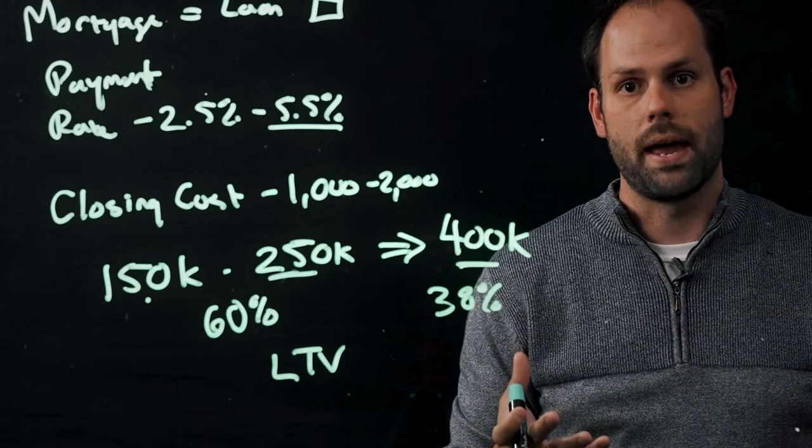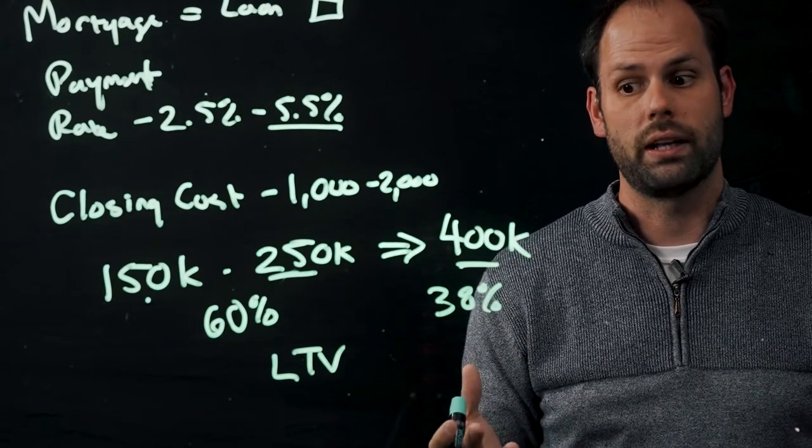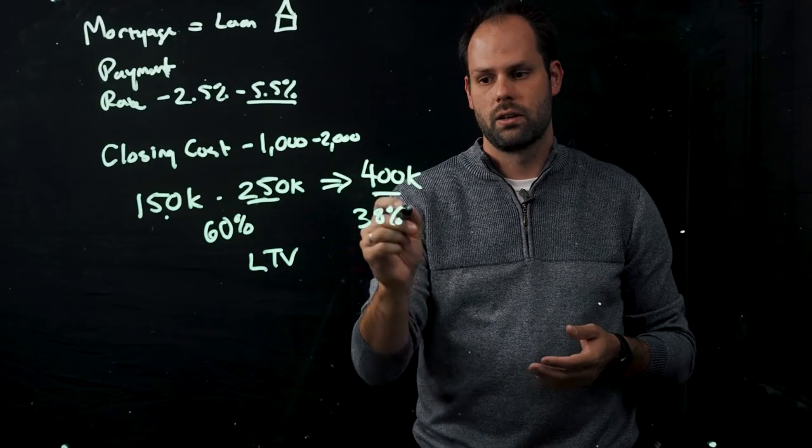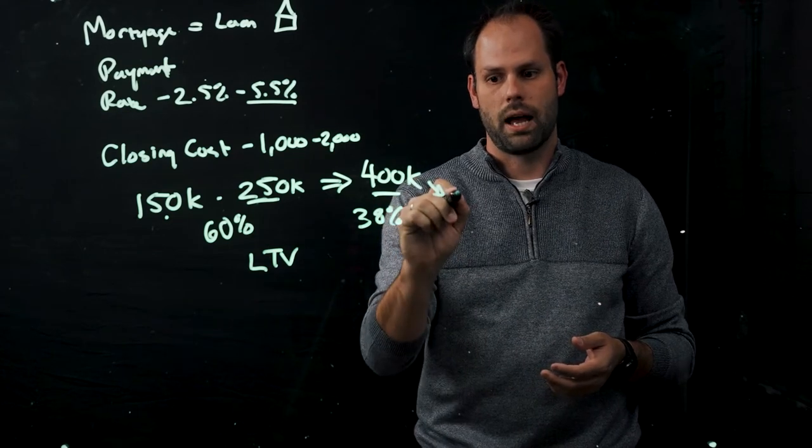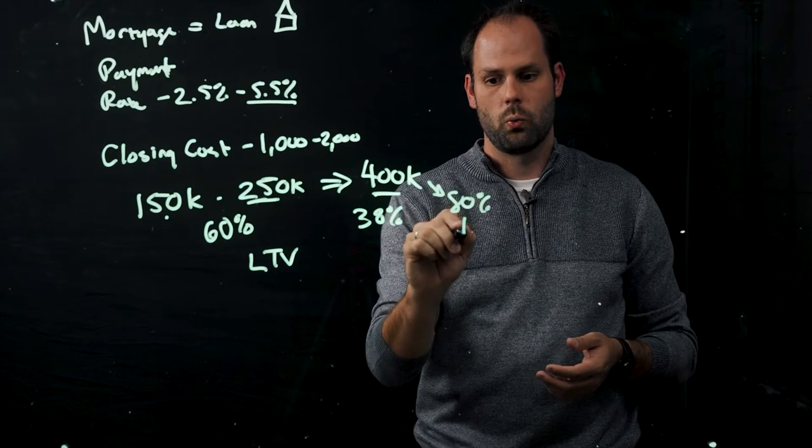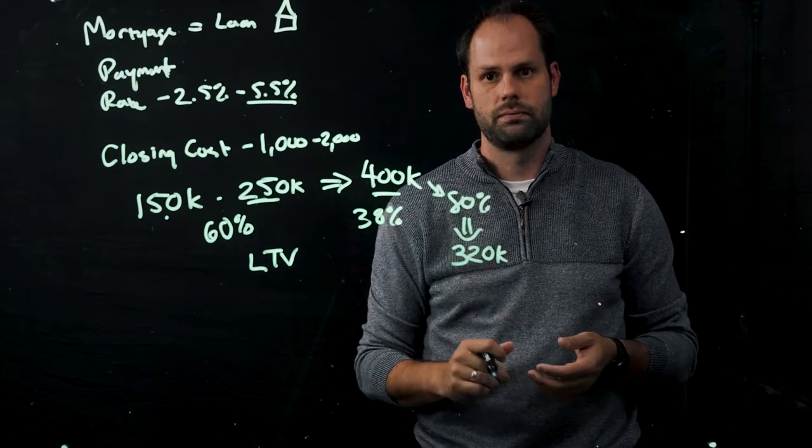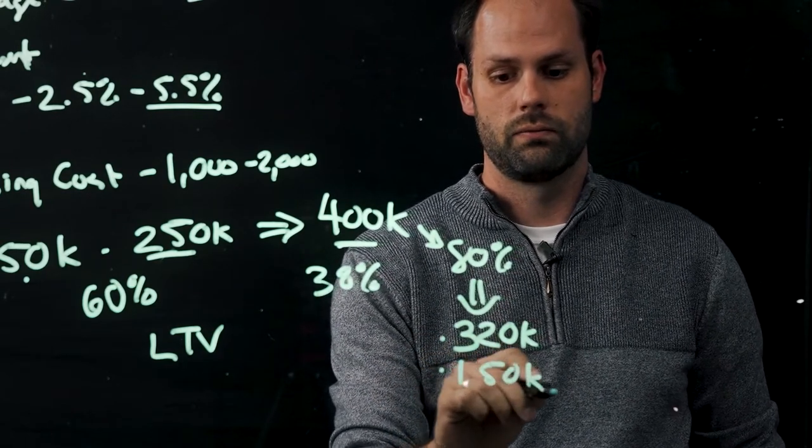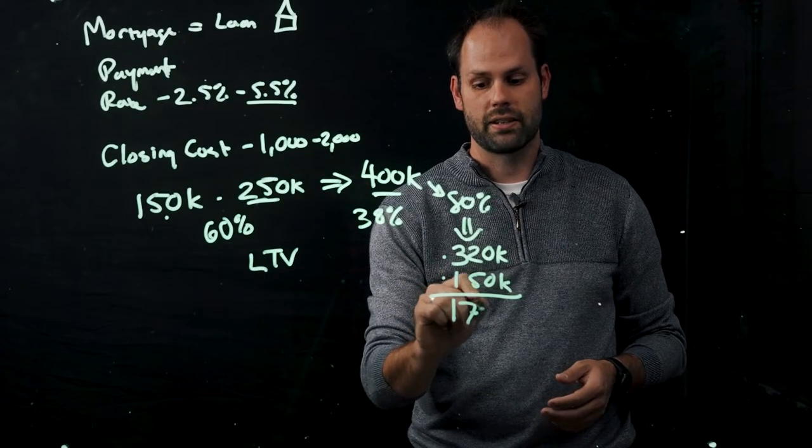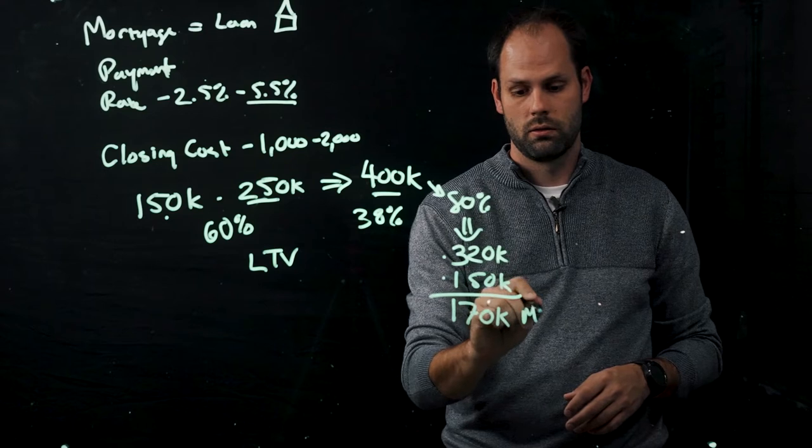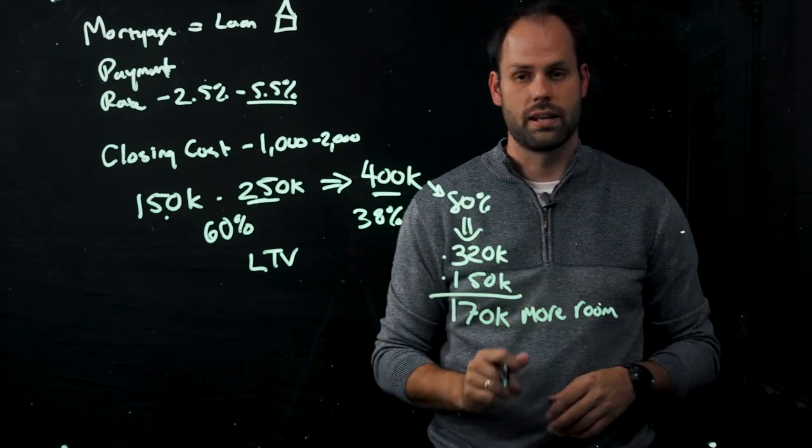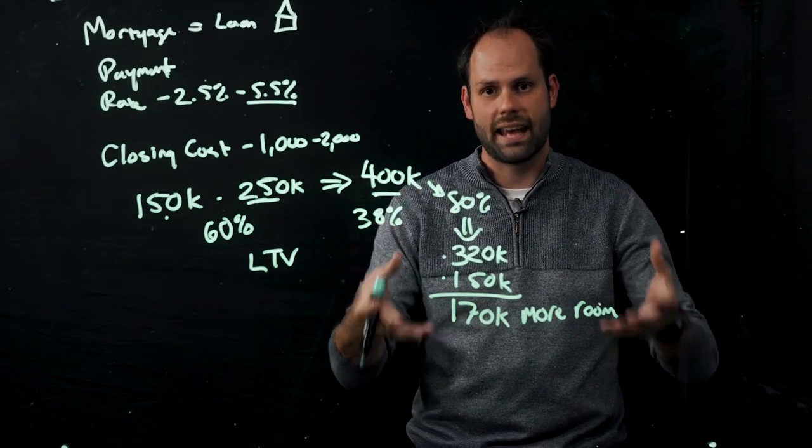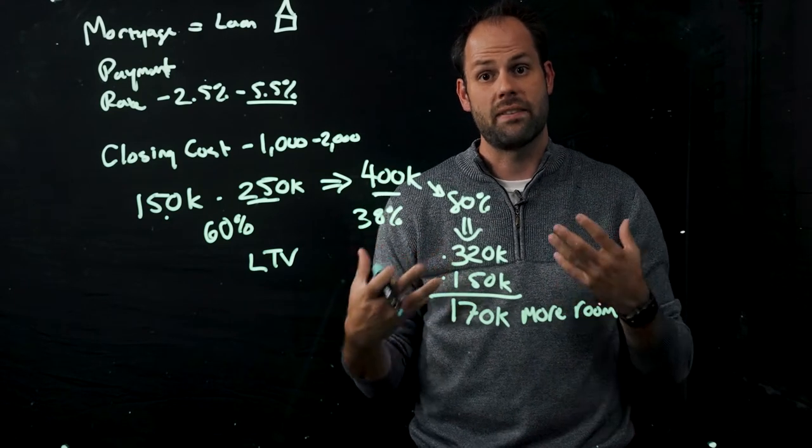Now, how much will the bank be willing to lend us now? We've mentioned before that they would be willing to lend us generally about 80%. Well, now what is that new amount that the bank might be willing to lend us? If we just take $400,000 and we apply 80% of that value, we get to $320,000. If we look at this 320, recognize we've already loaned out 150,000 of it, we now have $170,000 of more room to take a loan out against. Now, this is what would be considered a cash out refinance. In other words, we would be taking cash out of the value of our home, if it made sense for us to do that.